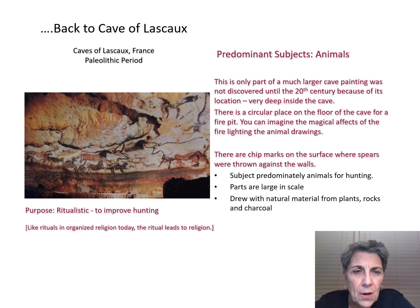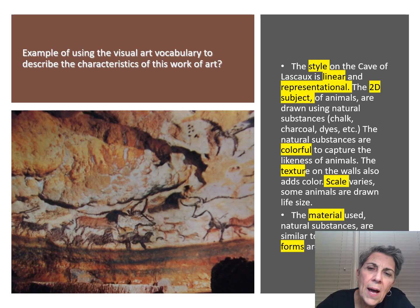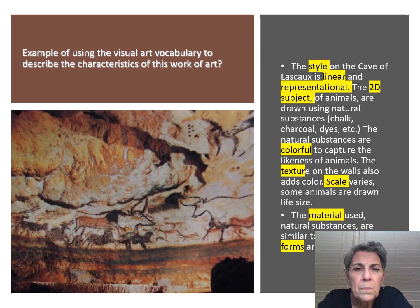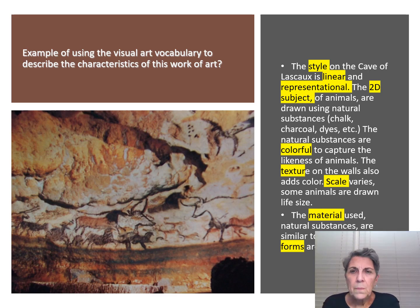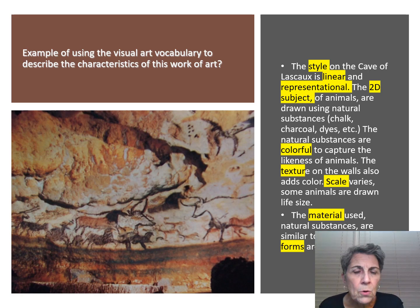That is your first slide to know. You should be able to describe it using the visual art vocabulary. I've covered part of it up with my video, but this is sort of how I would write this — showing you how to use the language you want to incorporate in paragraph form. For example: 'The style of the cave of Lascaux is linear and representational. The two-dimensional subject of animals are drawn using natural substances like chalk, charcoal, and dyes. The natural substances are colorful to capture the likeness of animals.' You see, just go on using that vocabulary and organize it any way you'd like.